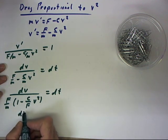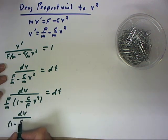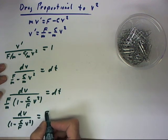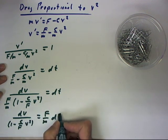us the equation dv over (1 - c/f v²) = f/m dt.